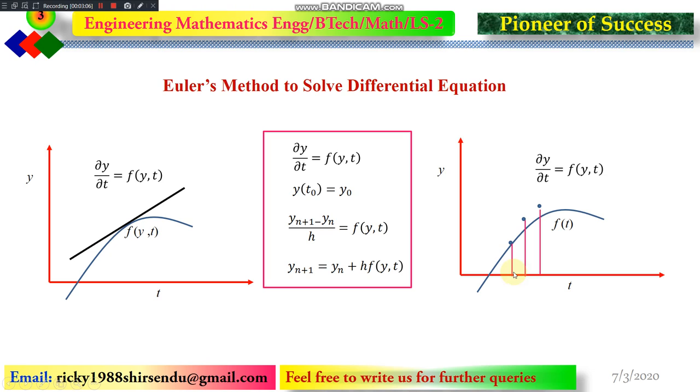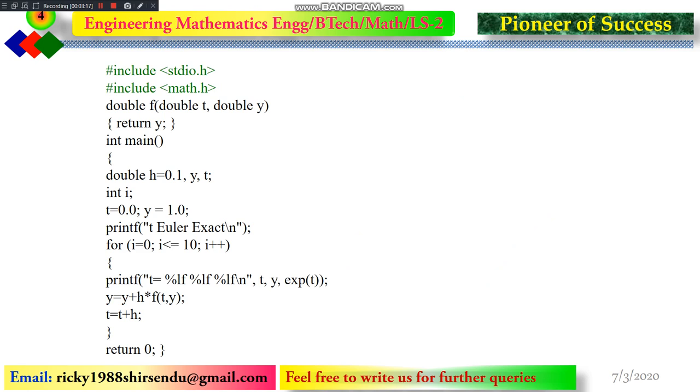Maybe it will be deviating from the main curve based on the delta t we choose, delta t means h. If we choose very less delta t, then the error will be minimum and we will be reaching to the analytical value. So in a numerical code, we will be showing you the things.